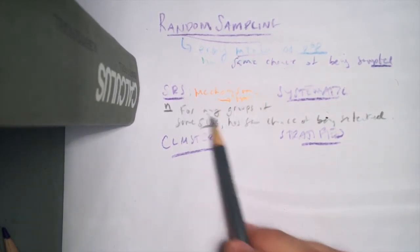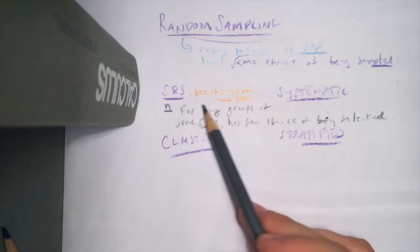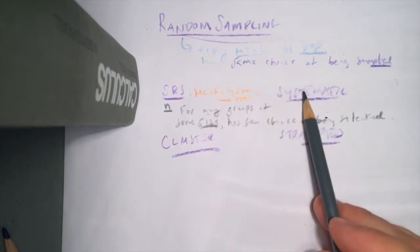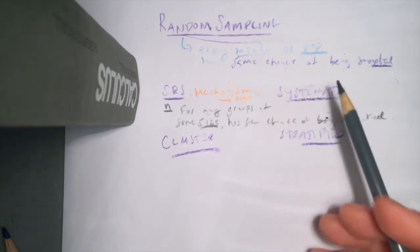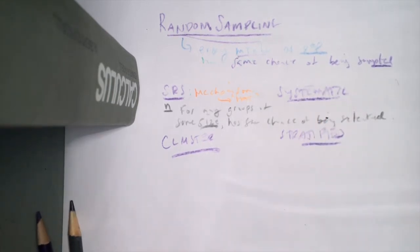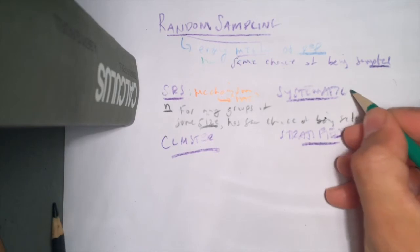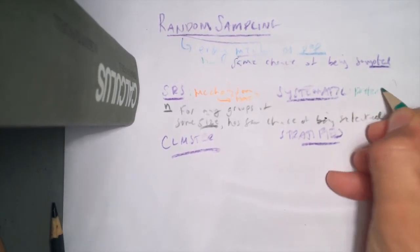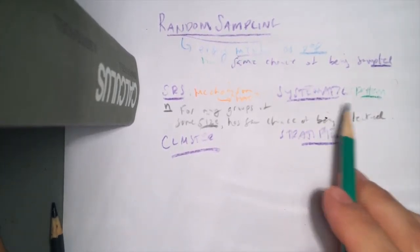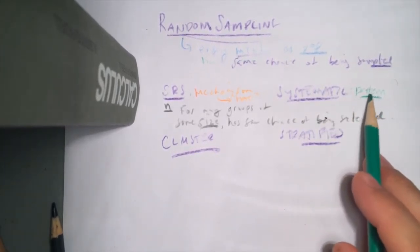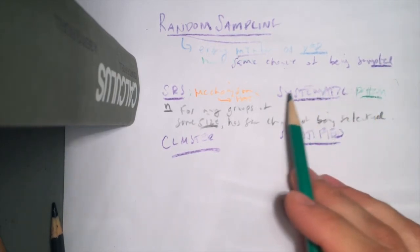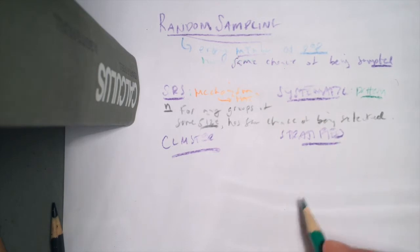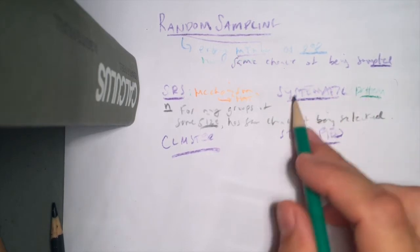Systematic sampling is a technique that uses some type of pattern to pick our sample. The randomness of this sampling technique doesn't come from the nature of the pattern itself, but from who was selected first in order to employ the pattern. In systematic sampling, we have some type of ordered population where you pick individuals according to a pattern.